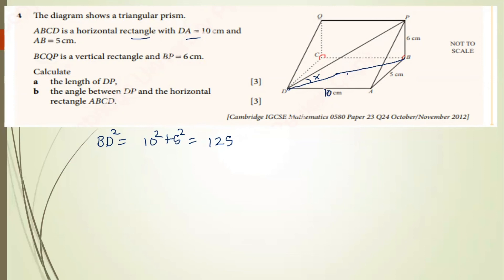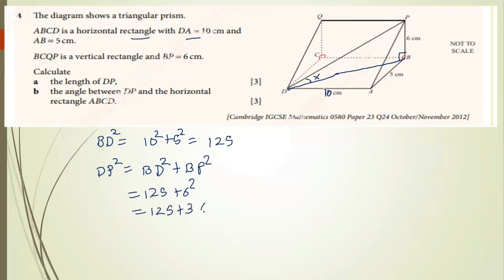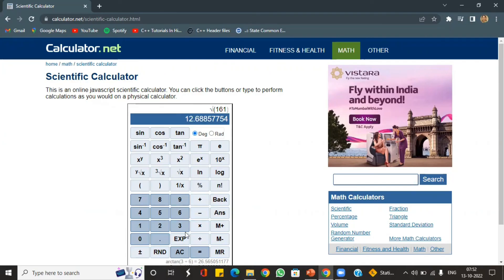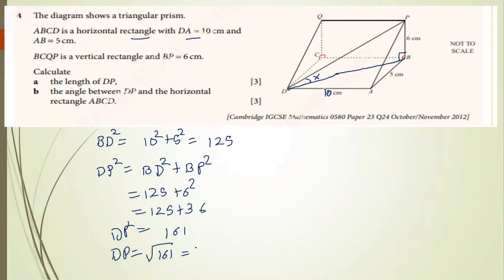Now find DP using Pythagoras on the right-angled triangle at B: DP² = BD² + BP² = 125 + 36 = 161, so DP = √161. Using the calculator, √161 = 12.68, which to 3 significant figures is 12.7 centimeters.